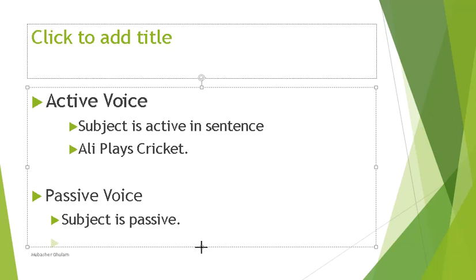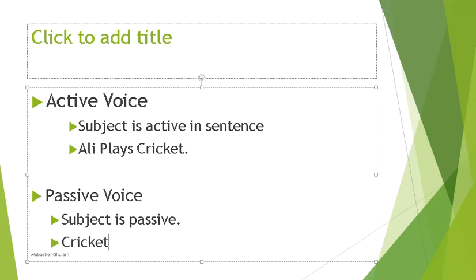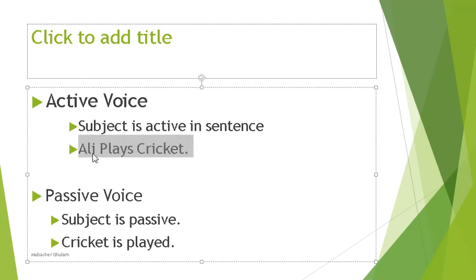When we deactivate Ali, we get passive voice. If we write 'cricket is played,' that is also a complete and correct sentence — I have not used Ali here. That's the real application: we're not just randomly following rules. Sometimes we want to talk about the subject, and sometimes we don't. When I want to highlight the subject, I use active voice: 'Ali is playing cricket.' But if I don't want to mention who is playing, I say 'cricket is played' — the subject has been deactivated, making it passive.